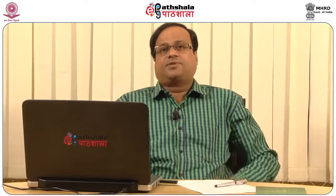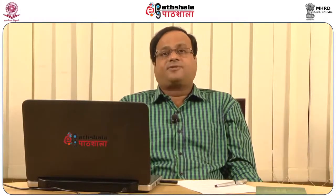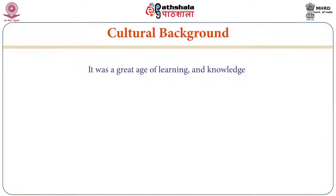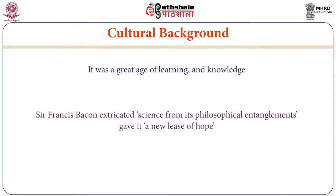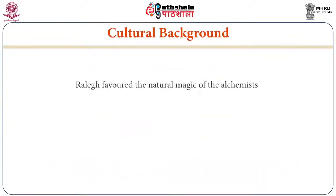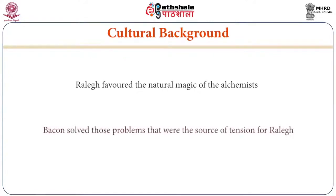In the texts that we come across in this age, there are references to witchcraft tradition, black magic, witches, ghosts, spirits, and supernatural machineries. It was a great age of learning and knowledge. No one can forget Francis Bacon, who made science and philosophical entanglements very special. New scientific theorists emerged. Astrology, alchemy, magic, witchcraft, and palmistry were very popular. Raleigh favored the nature of magic to the alchemists. Bacon solved the problems that were the source of tension for Raleigh.